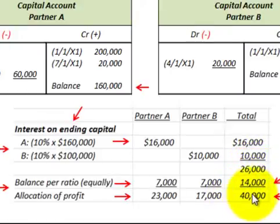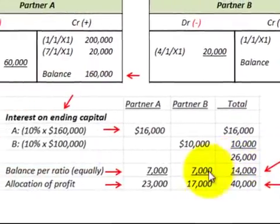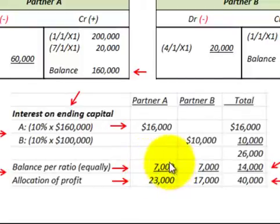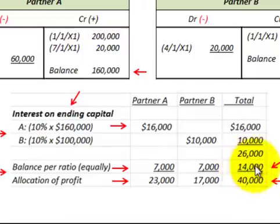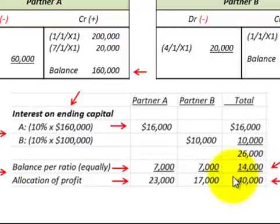The partnership profit was $40,000. Taking the difference, $40,000 less the $26,000 already allocated gives us $14,000 more to allocate. Using the same 50/50 profit and loss ratio, partner A gets $7,000 and partner B gets $7,000. So $26,000 plus $14,000 gives us $40,000 allocated for the period. Partner A received $23,000 total and partner B received $17,000 total. This was the interest based on the ending capital balance.